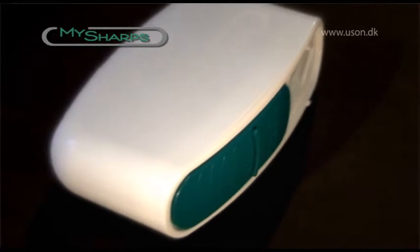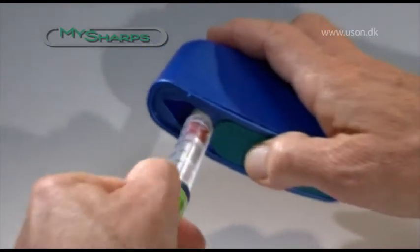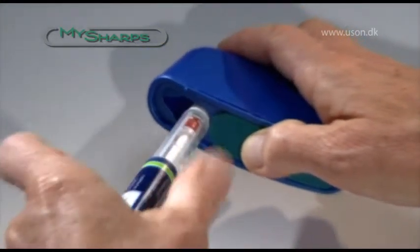The needles can easily be dismantled by inserting the insulin pen into the needle vent. You then twist the needle into the container.